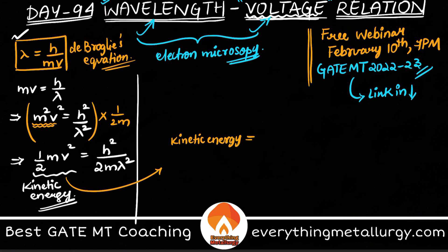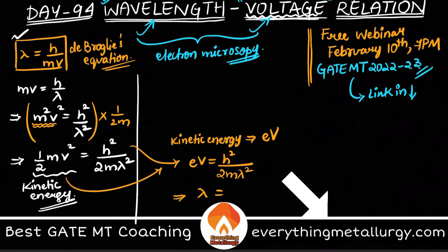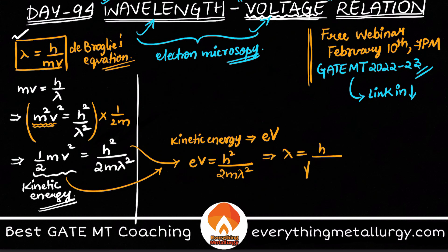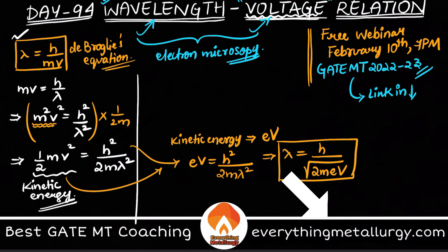So the kinetic energy equals the electron volt (eV) being provided. Therefore: eV = h² / (2mλ²). Rearranging for λ, we get λ = h / √(2meV). This is how the relation between wavelength and acceleration voltage is derived.